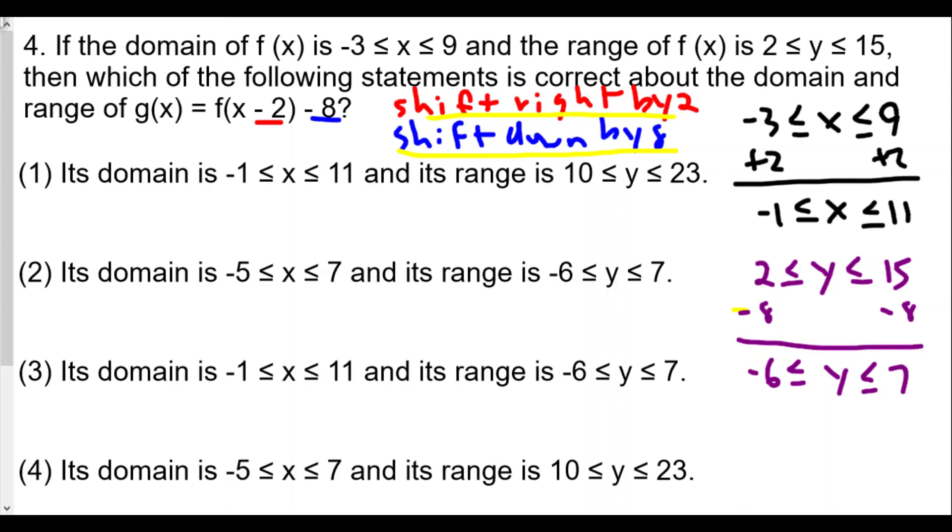This is our domain, so it can't be choice 2 and it can't be choice 4. This is our range. Our range is from -6 to 7, so it can't be choice 1, it must be choice 3.